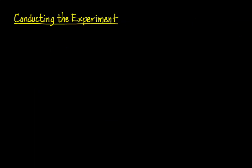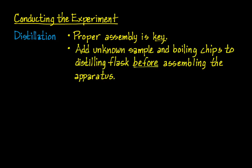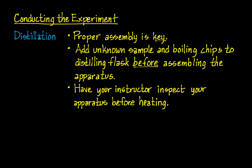Here are a few pointers for conducting the experiment at the bench. For the distillation, proper assembly really is the key — everything needs to be in the right place. The joints between pieces of glassware have to be connected with airtight seals, and everything has to be in proper alignment. This is why your instructor will inspect the apparatus before you start heating. Make sure you add your sample and two or three boiling chips to the distilling flask before you start assembling the apparatus, so you don't have to dismantle it and start over. Have your instructor inspect everything before you turn on the heat, with water running through the condenser and everything ready to go.